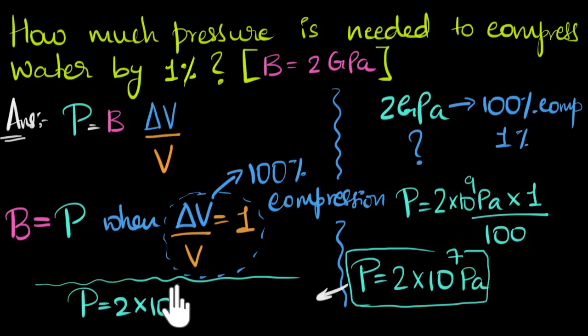So 10 to the power of seven can be written as 10 to the power of two times 10 to the power of five. And this is a hundred, and a hundred times two would be 200. So this is 200 times 10 to the power of five pascals. And guess what?